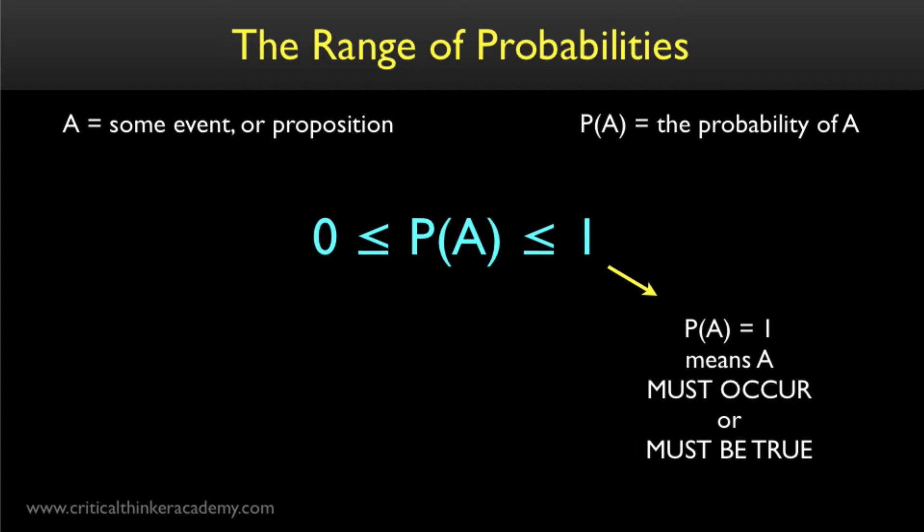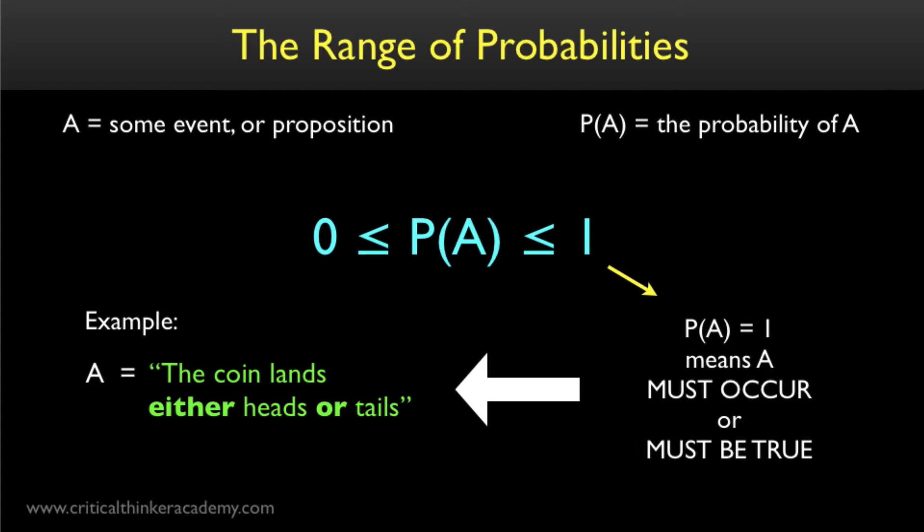But there are some obvious examples. If we grant that the only two options in a coin toss are to land heads or land tails, then it's safe to say that the probability of the coin landing heads or tails is one, since these exhaust all the possibilities. And this is one common way that this concept is used in probability theory and statistics.